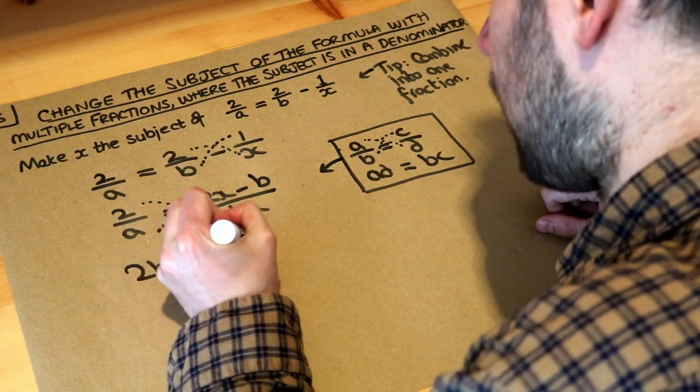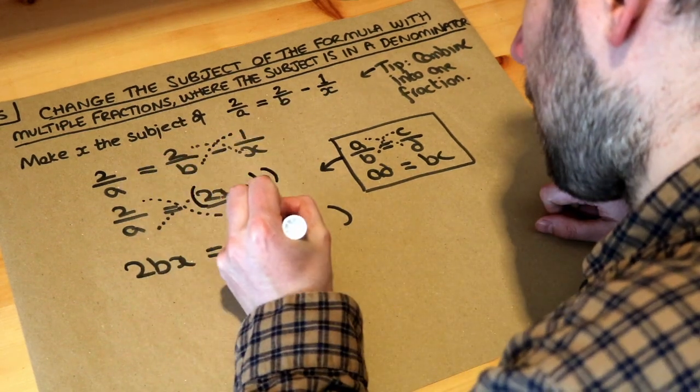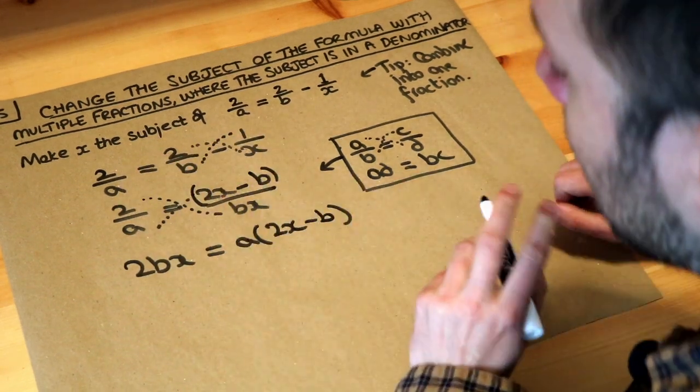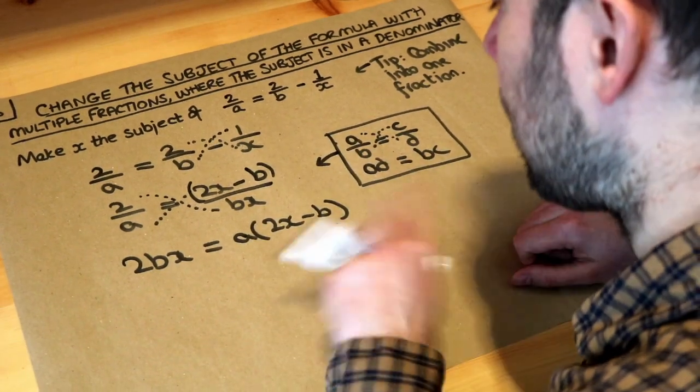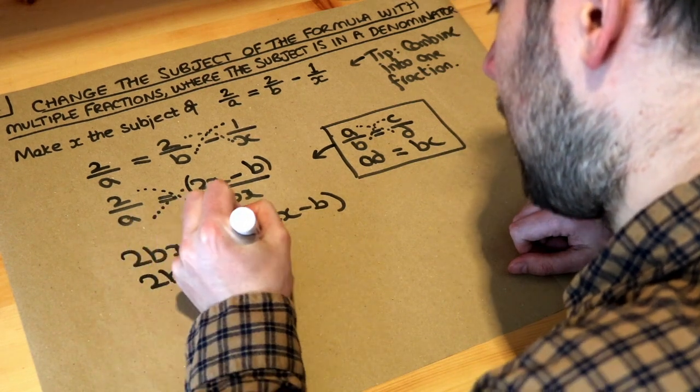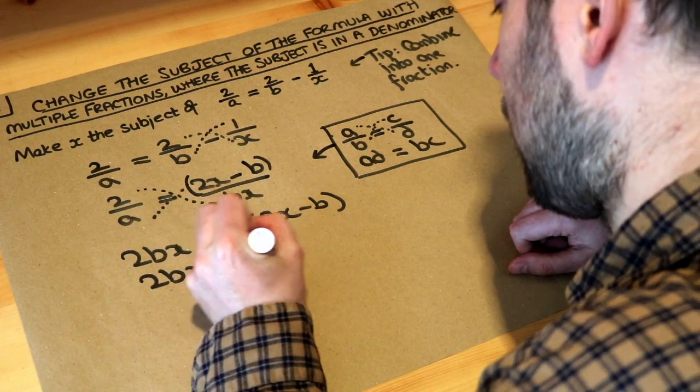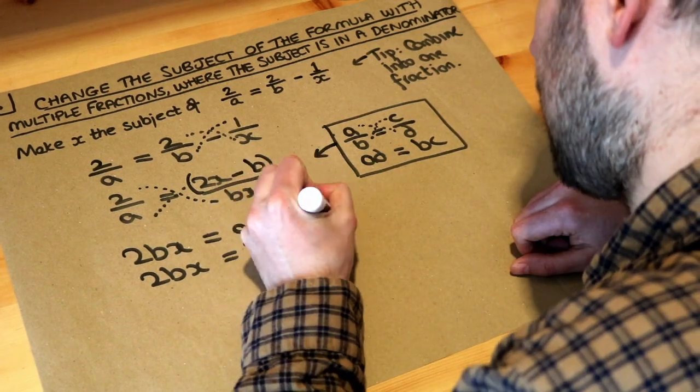So we've got a times, I'm going to put a bracket here for the moment, a times 2x minus b. And now we've completely got rid of the fractions, so we're on the home straight now. So let's just expand this out first. So we've got 2bx equals a times 2x is 2ax. These variables should go in alphabetical order. a times minus b is minus ab.